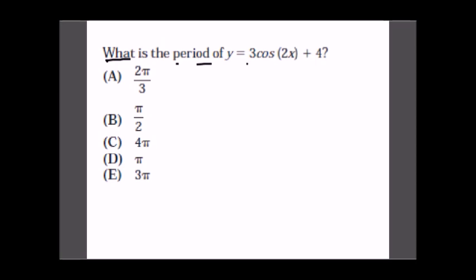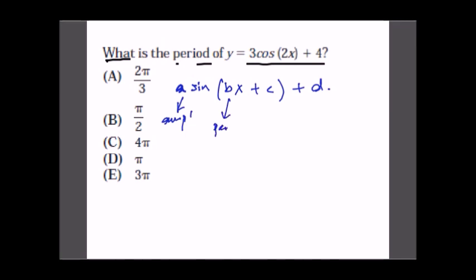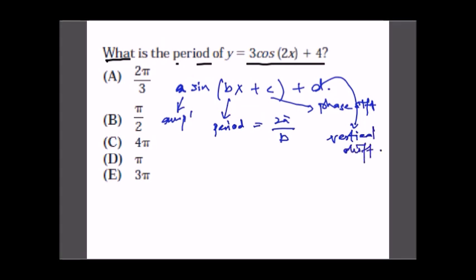The question: what is the period of y = 3cos(2x) + 4? The standard period formula is 2π/b. Comparing with the standard form, b = 2, so the period is 2π/2 = π. The answer is π.